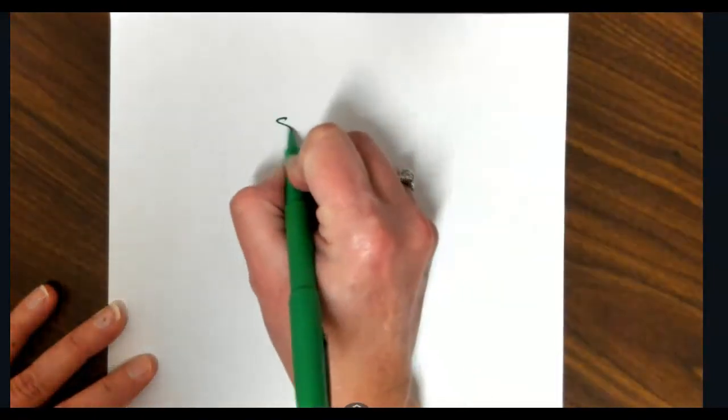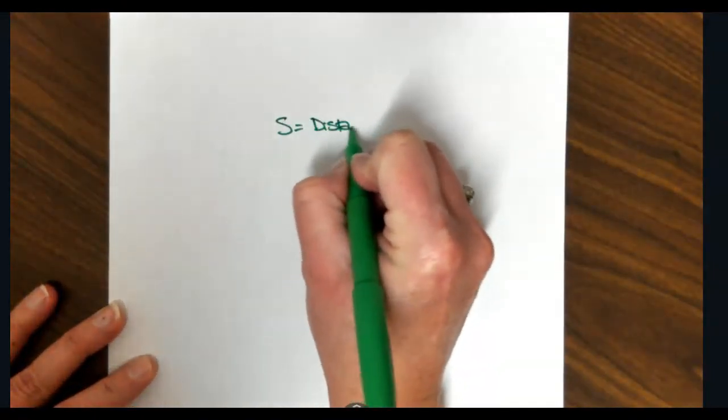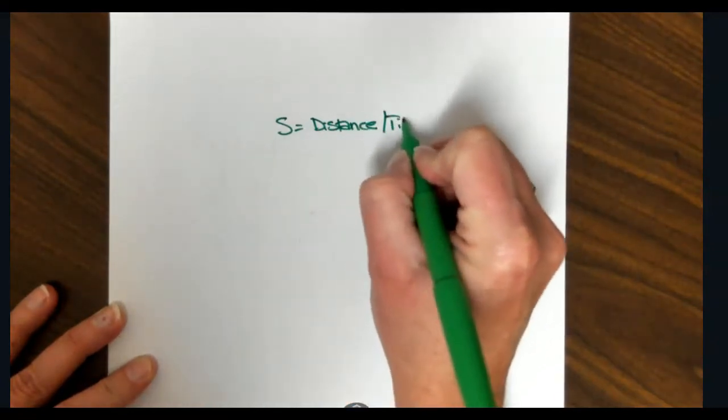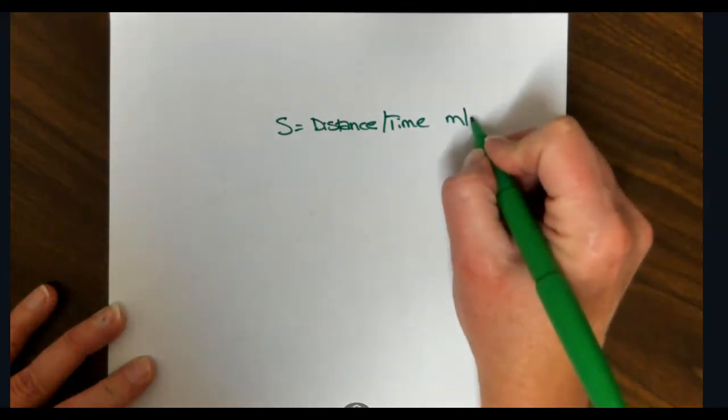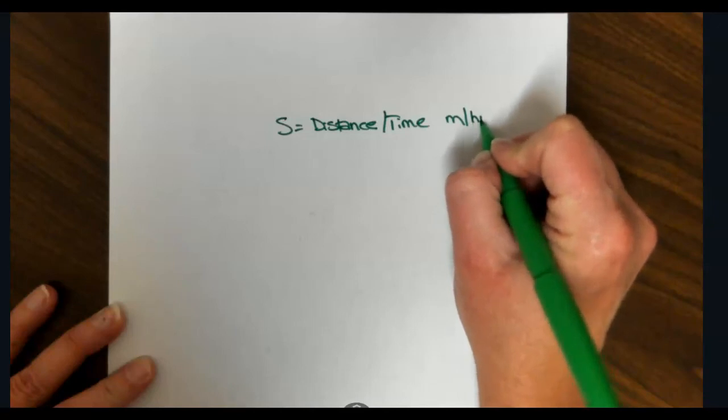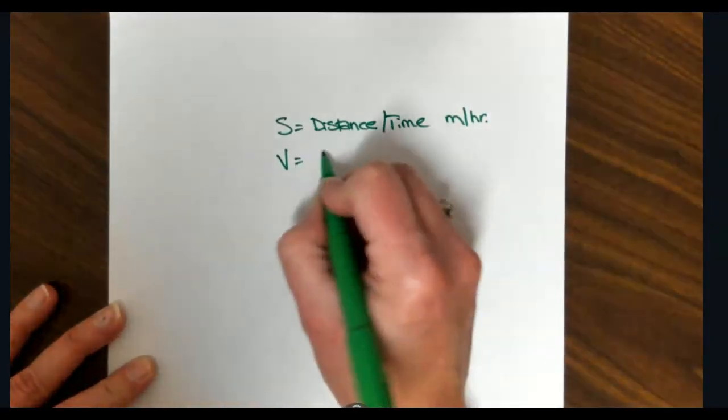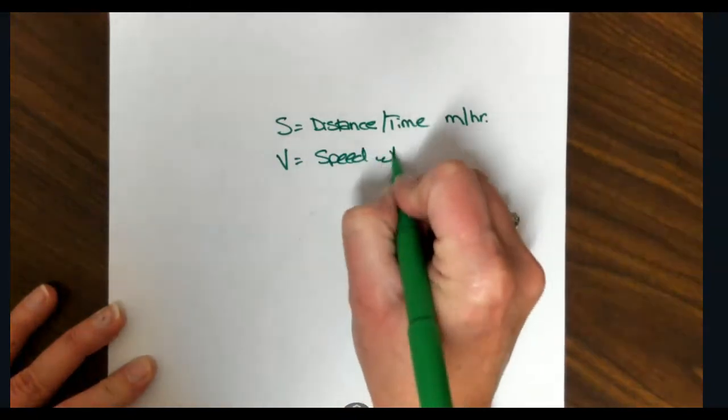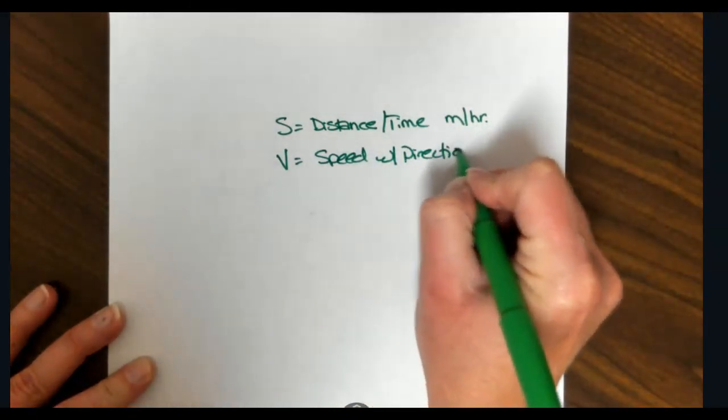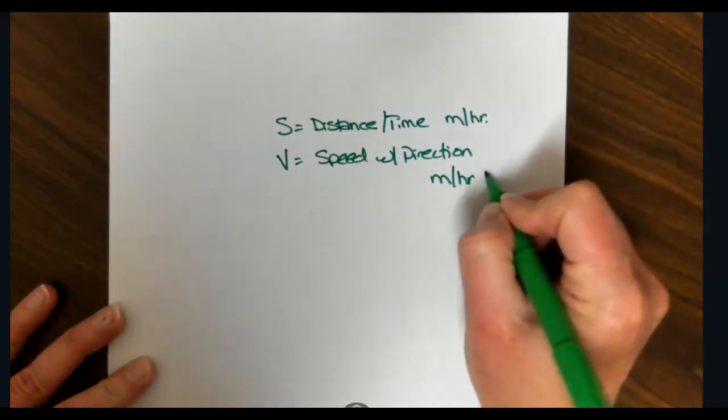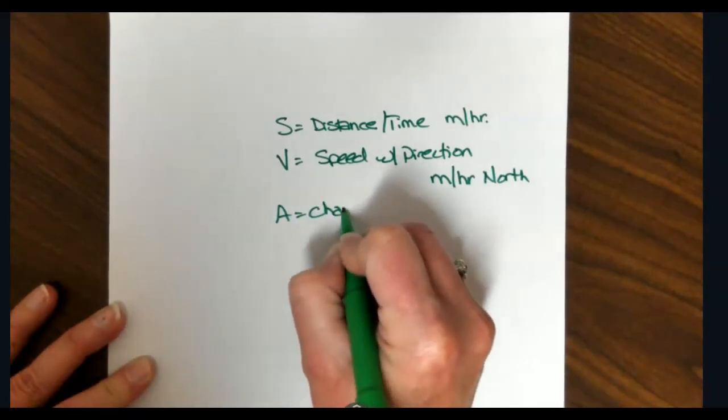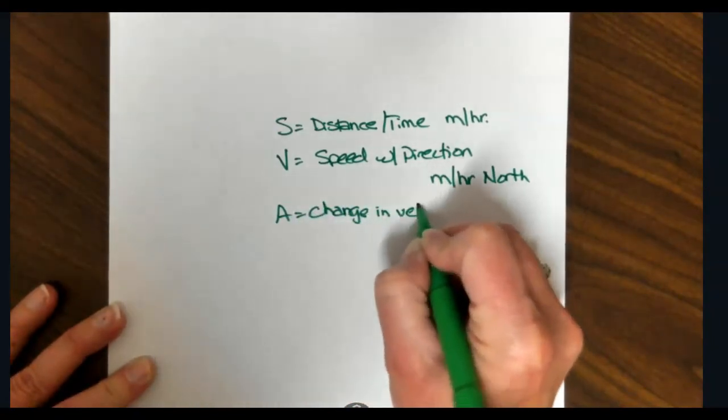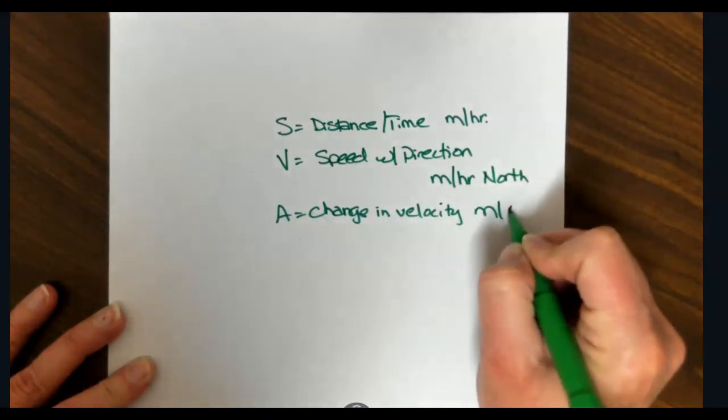Now just one more thing to look at is speed, velocity, and acceleration. So speed is distance divided by time. So maybe meters per hour. Velocity is speed with a direction. So maybe it's meters per hour north. Acceleration is a change in velocity, and it's meters per second squared.